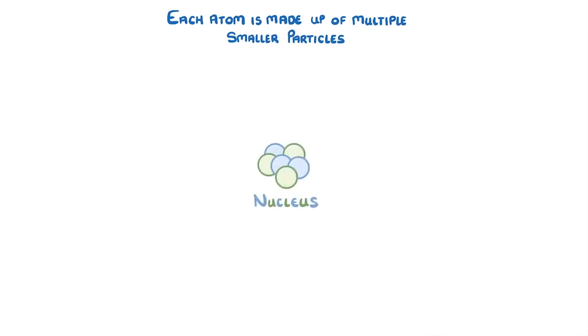The first thing to know is that each atom is made up of multiple smaller particles, and its basic structure is a central nucleus surrounded by electrons, which orbit around the nucleus in rings that we call shells. Although we've only shown one electron orbiting here, in reality all of the electrons would be moving all the time.